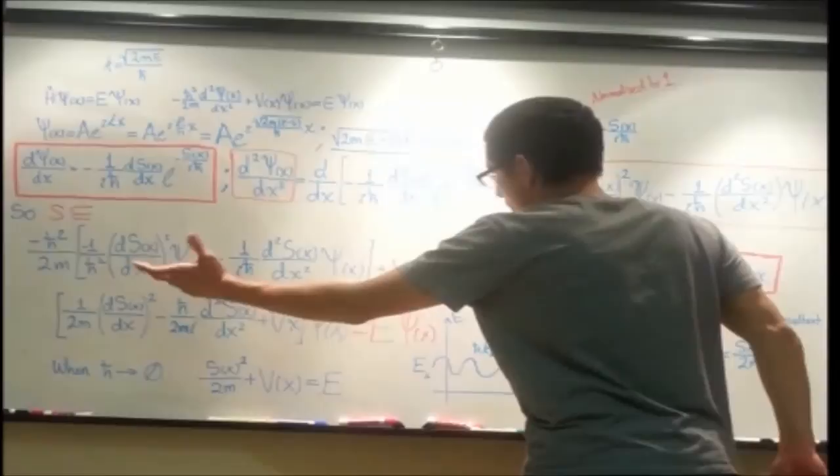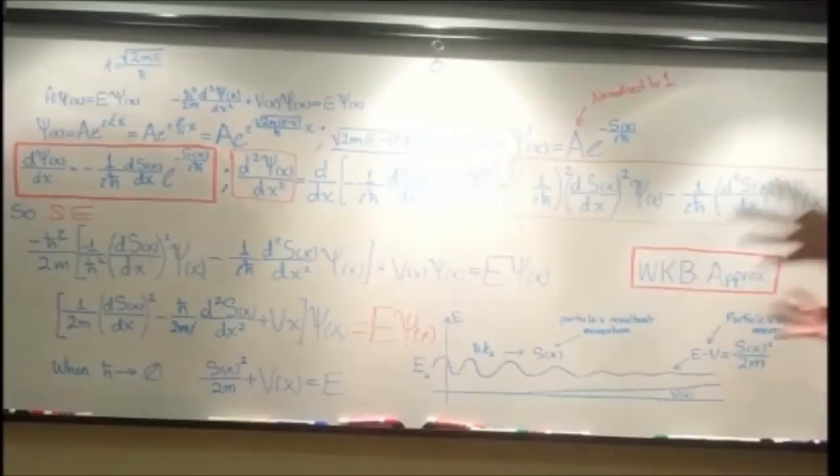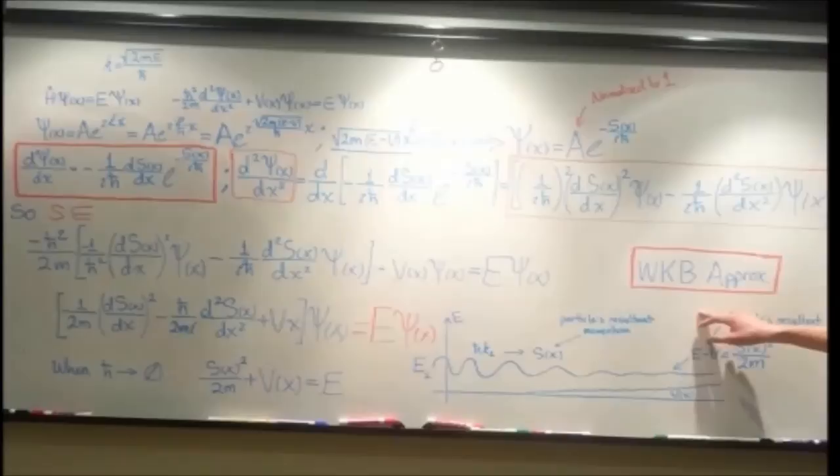And we come up with this version right here for the Schrödinger equation. This is for the quantum sized version of this approximation, but this is good because this corresponds with the classical version of everything.